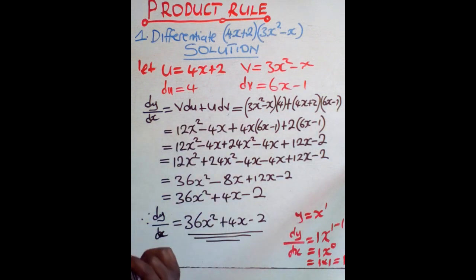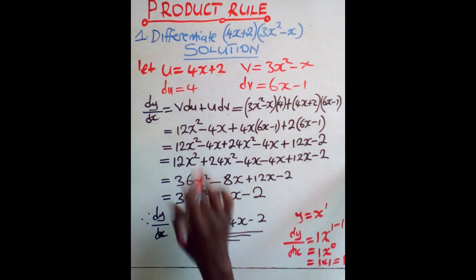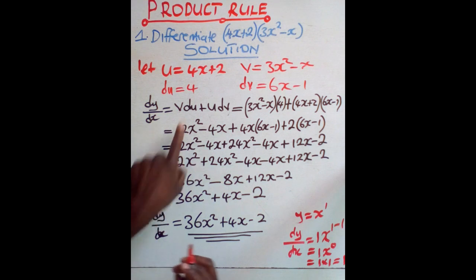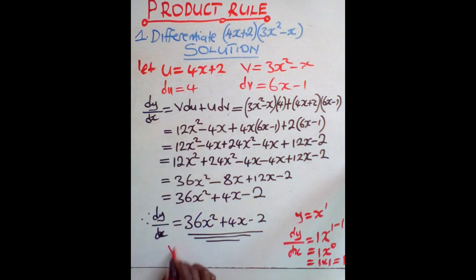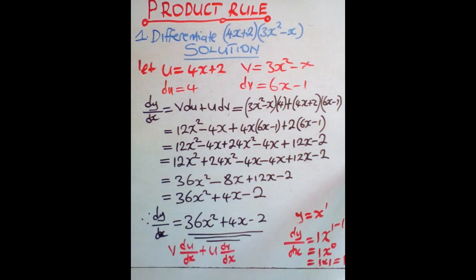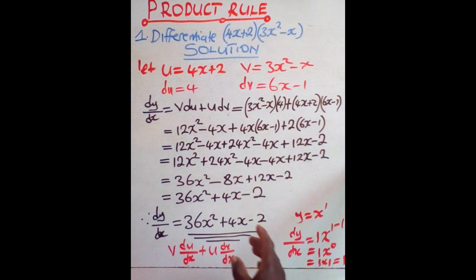Then this formula, it's a very important formula. You have to always remember it. I'll write it the other way around, the way it is written in some of the books. If I have to write it the other way around, then it will be v du over dx plus u dv over dx. This is how it is written in most of the books. This is just a shortcut, the shorter way of writing it, but it's supposed to be written like that.